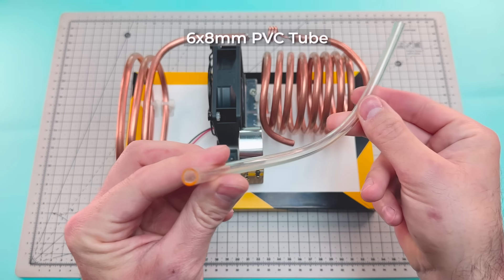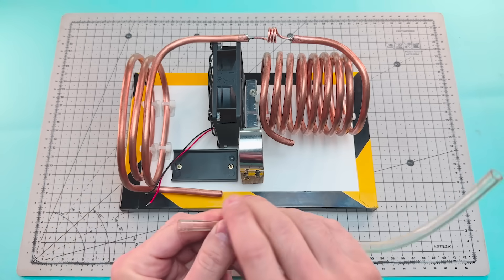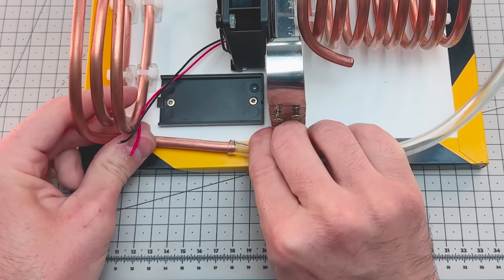We'll cut a PVC tube into two pieces and connect them to the outlets of the condenser and the evaporator.